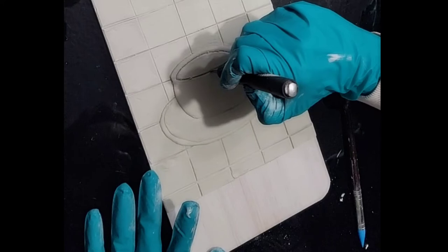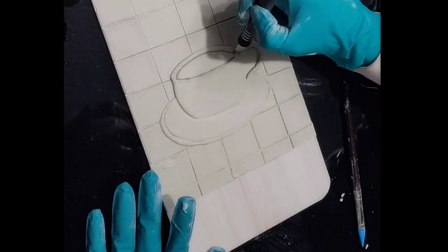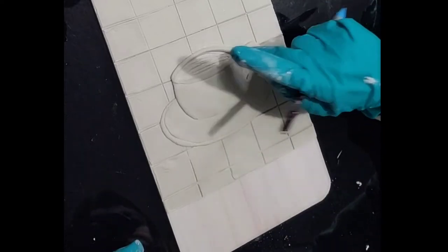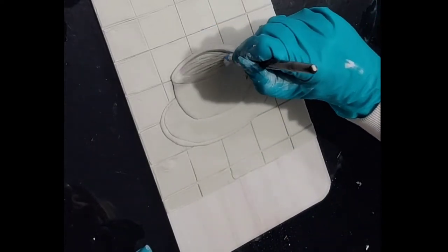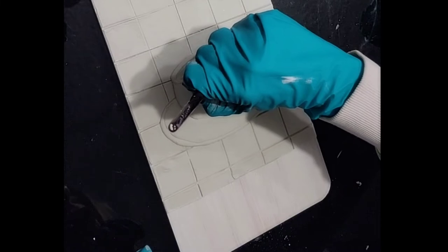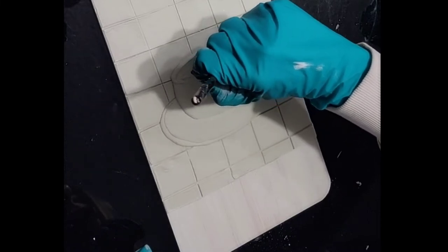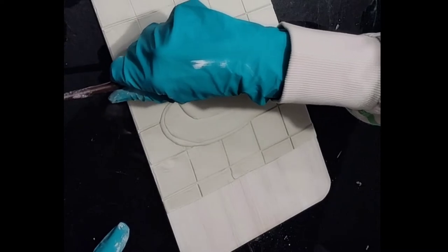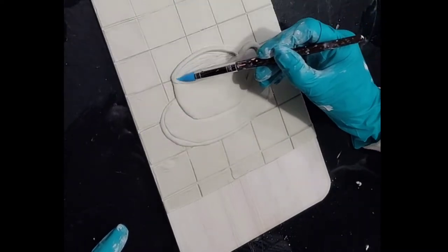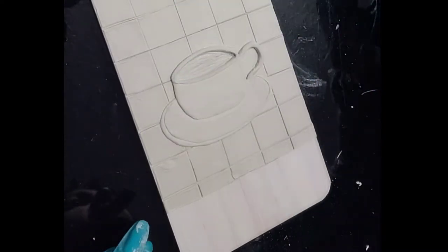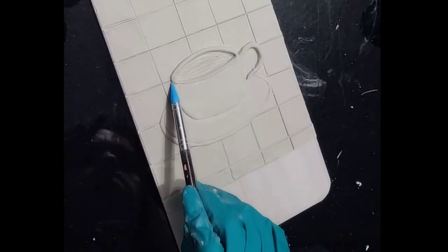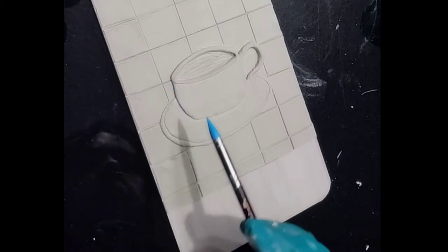Now I'm just cutting out the center part where the coffee would go—not cutting all the way through, we don't want to cut into our tiles. Then just smoothing that again. I gave it a little bit of texture so it looks more like liquid under there, smoothing the edges all around it. We want to make sure we have a nice firm edge around that because we're going to pour our resin right into that hole.